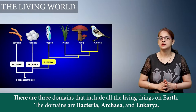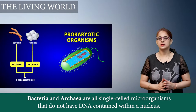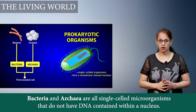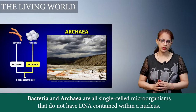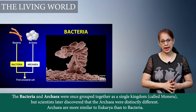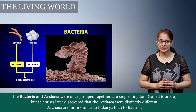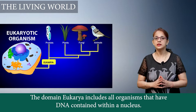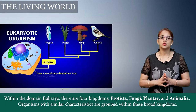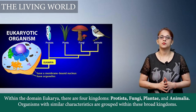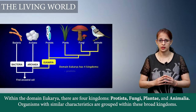The three domains are Bacteria, Archaea, and Eukarya. Bacteria and Archaea were earlier included in one kingdom — Kingdom Monera — but later they were found to be different, and scientists found that Archaea was more closely related to Eukarya than to Bacteria. Both Bacteria and Archaea include single-celled unicellular organisms whose DNA lies freely in the cytoplasm, whereas Eukarya includes multicellular organisms whose genetic material lies within the nucleus. Eukarya is further divided into four kingdoms: Kingdom Protista, Kingdom Fungi, Kingdom Plantae, and Kingdom Animalia.